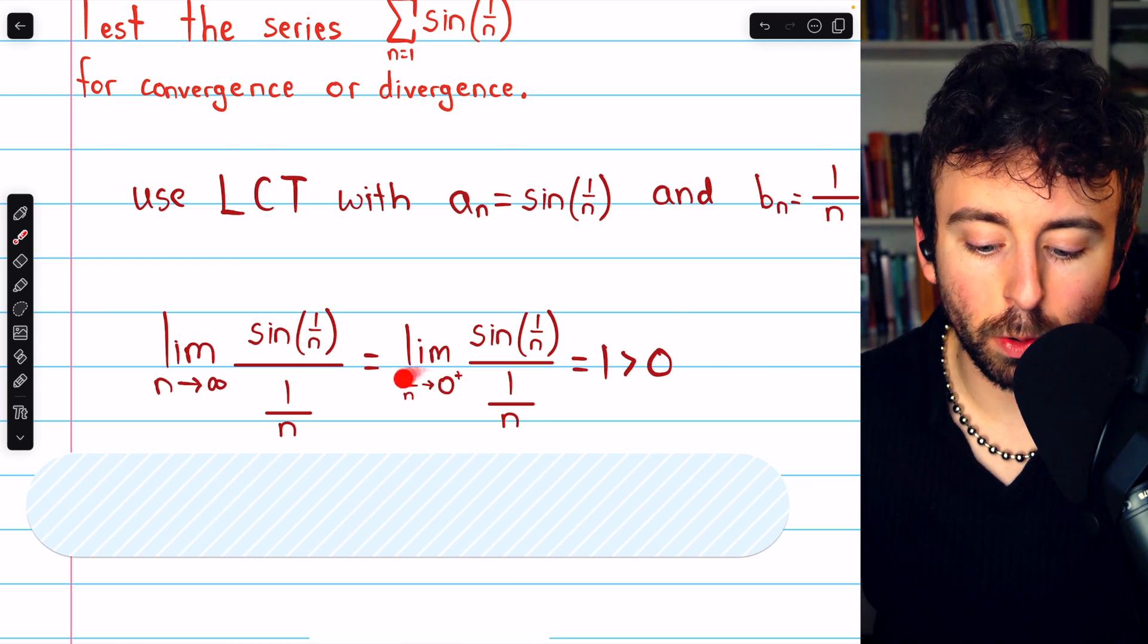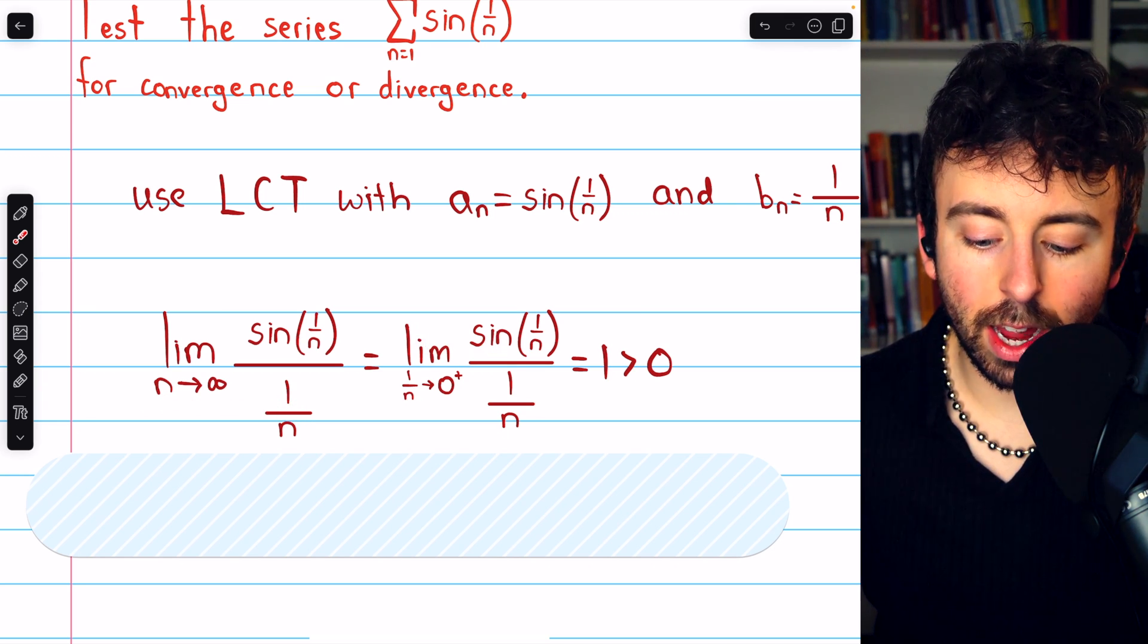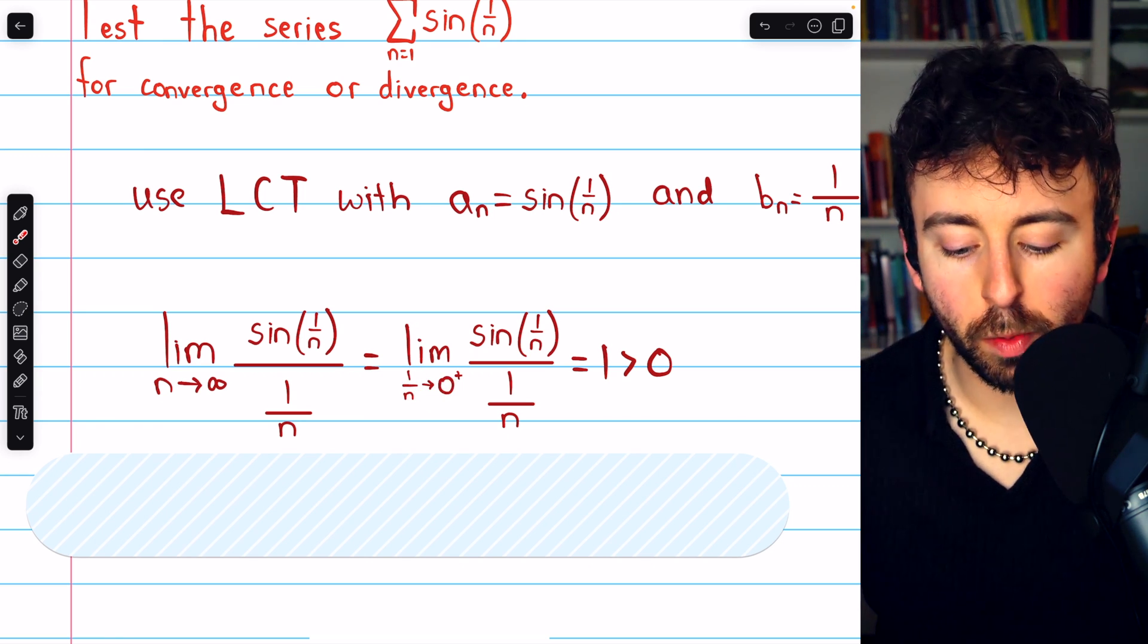More specifically, it's approaching 0 from the right. So we can rewrite this limit as the limit of sine of 1 over n over 1 over n as 1 over n approaches 0 from the right.